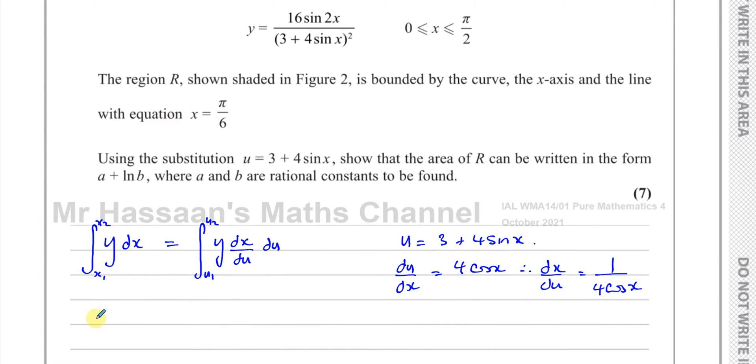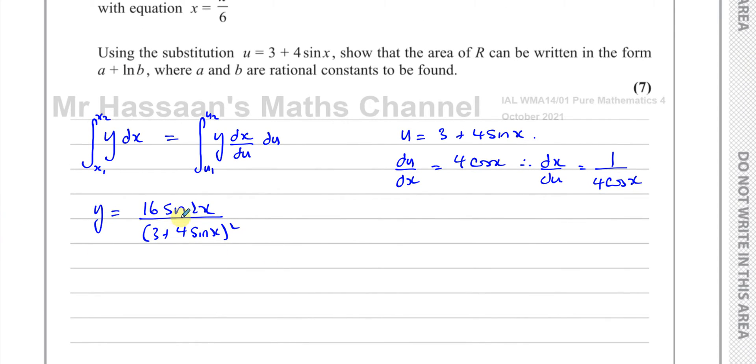Now I've got to take our function. So y = 16sin(2x) over (3 + 4sinx)². I'm going to try to write this so that I can replace everything in terms of u as well. First I can see I've got sinx and cosx here. This is sin(2x), so I can replace sin(2x) with 2sinx·cosx using the identity that we should know, that sin(2x) is 2sinx·cosx. That's one of the identities from P3, double angle formulae. And 3 + 4sinx, well, I know that's equal to u, so I can replace that with u².